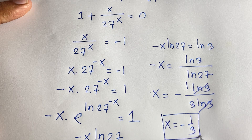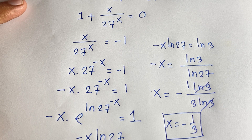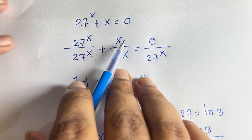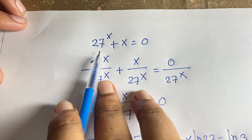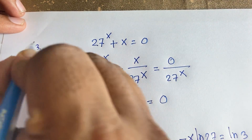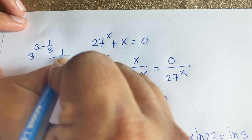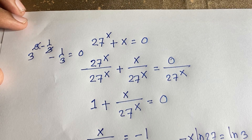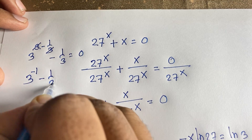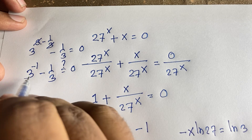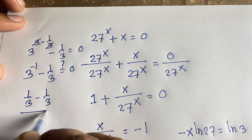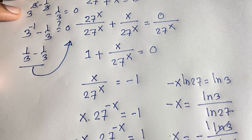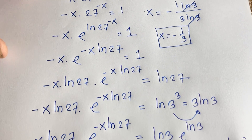Let's verify: substituting x = -1/3 into 27^x + x = 0 gives 27^(-1/3) - 1/3. Since 27 = 3^3, we get (3^3)^(-1/3) = 3^(-1) = 1/3. So 1/3 - 1/3 = 0. Confirmed! Therefore x = -1/3 is the correct answer. Thank you — if you enjoyed this video, please subscribe for more interesting videos.